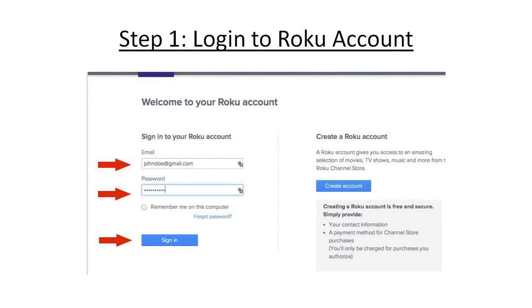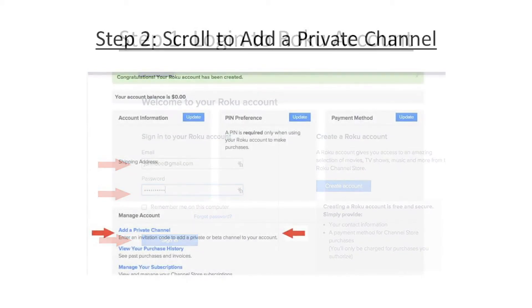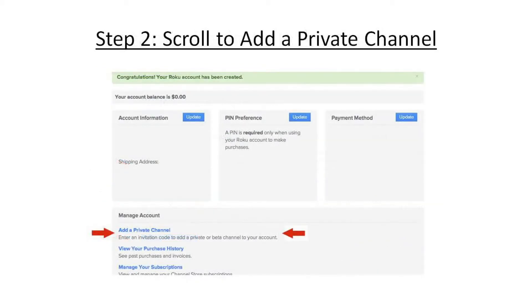First, log into your account at the Roku.com website on a computer or other device by typing in your email address and password. On the next screen, scroll down until you see the Add a Private Channel option and select it.